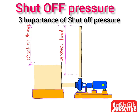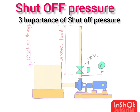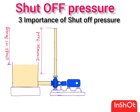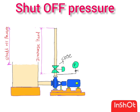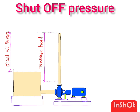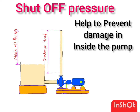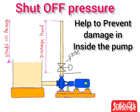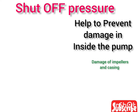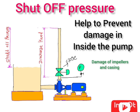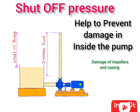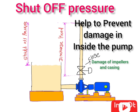Knowing the shut-off pressure gives three main benefits. The first benefit is that it helps prevent damage to the pump. If you close the valve suddenly, pressure increases and may damage inside components like the impeller and casing. Knowing the shut-off pressure helps you design the system to avoid this damage.